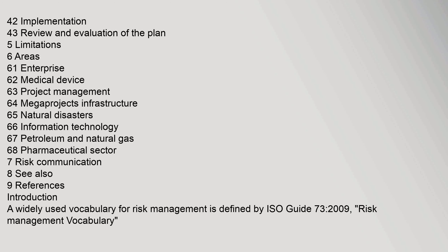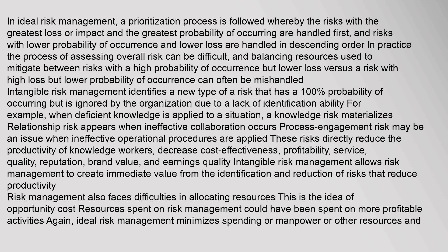A widely used vocabulary for risk management is defined by ISO Guide 73:2009, Risk Management Vocabulary. In ideal risk management, a prioritization process is followed whereby the risks with the greatest loss or impact and the greatest probability of occurring are handled first, and risks with lower probability and lower loss are handled in descending order. In practice, assessing overall risk can be difficult and balancing resources between high-probability/lower-loss versus high-loss/lower-probability risks can often be mishandled.